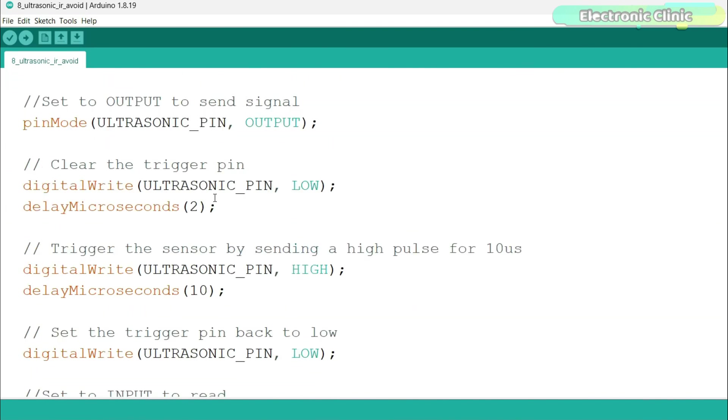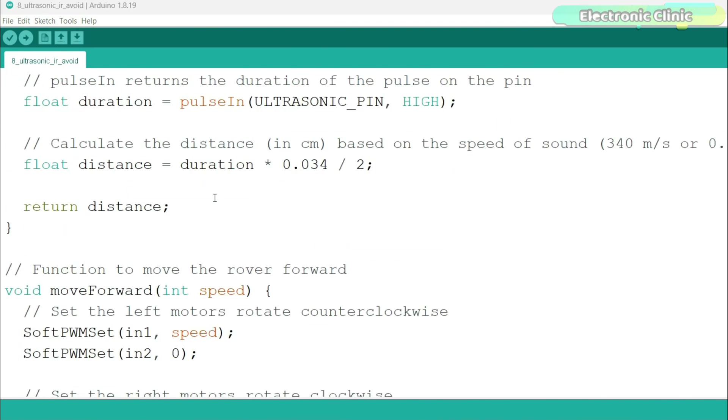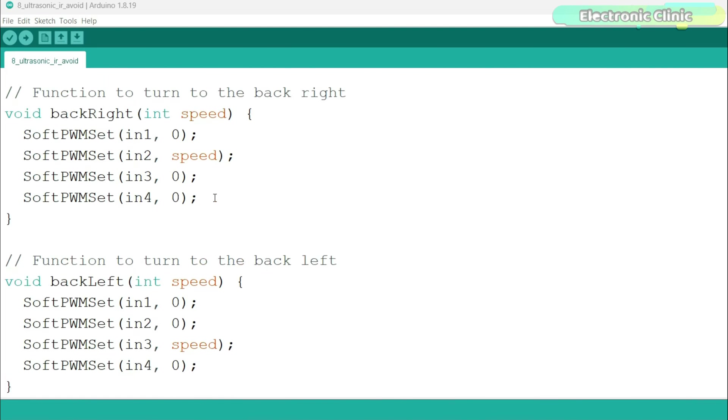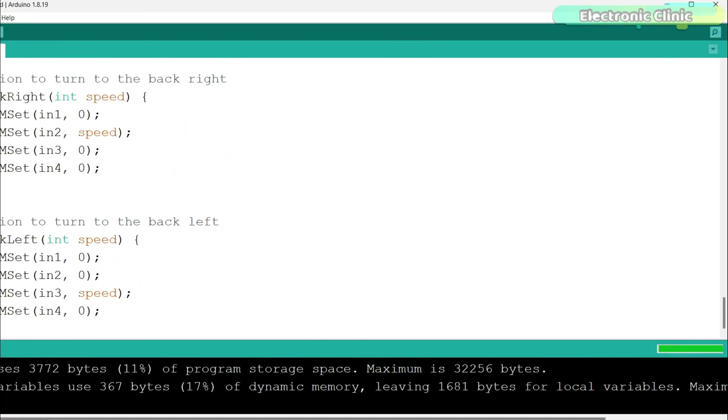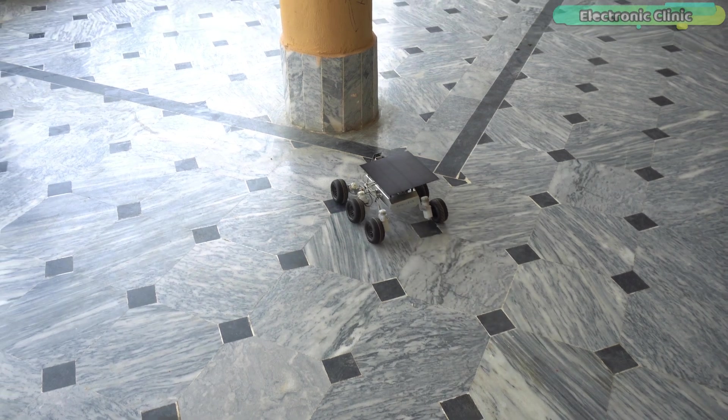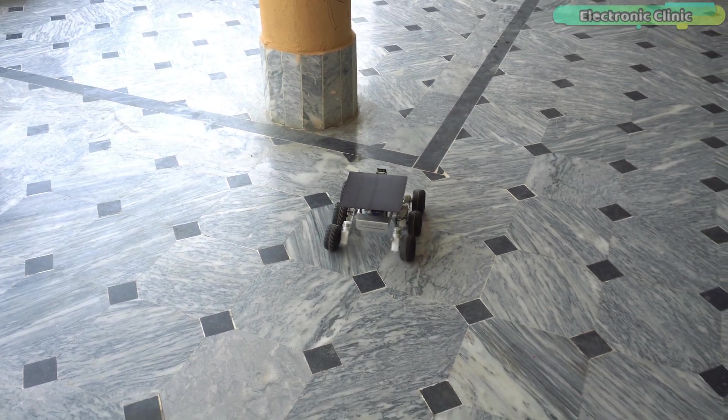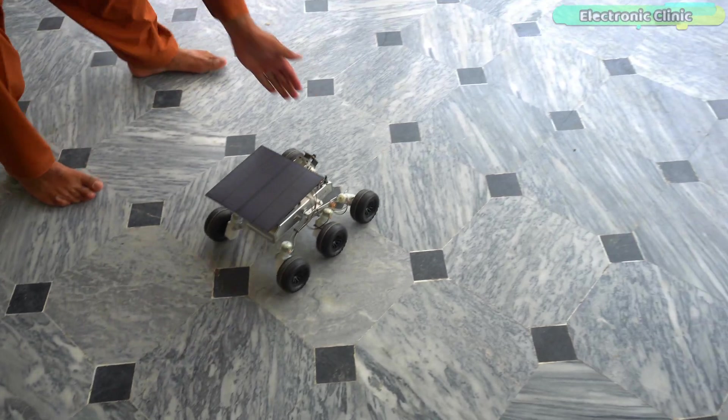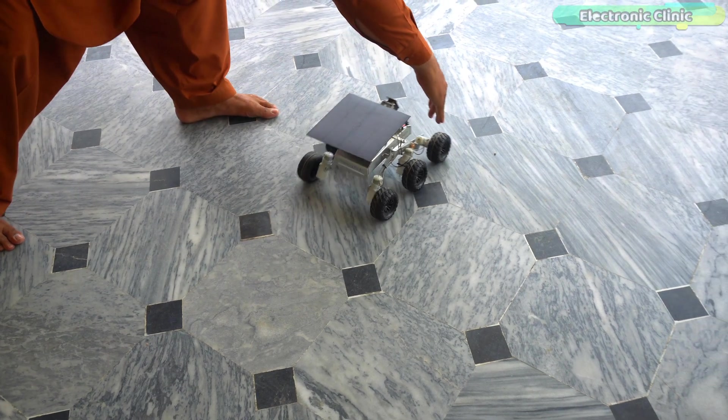You can clearly see the same set of instructions I used. So, I think there is no need for me to explain anything. So, let's go ahead and upload this program. Now, it can not only detect objects on the front side but also on the right and left sides of the rover.